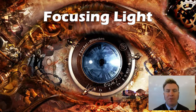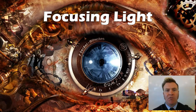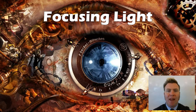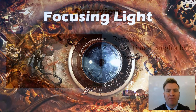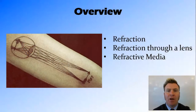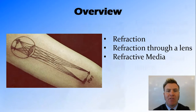Hi guys, in this video we're going to look at the process of focusing light through refraction and how this occurs in the eye. We're going to talk about the conditions under which refraction occurs, how refraction occurs through a lens, and the different refractive media of the eye.